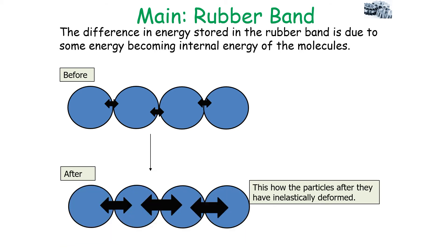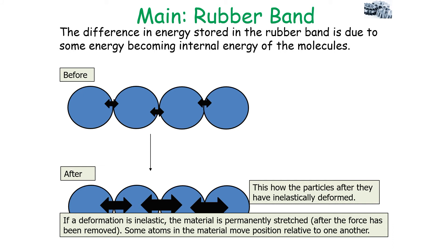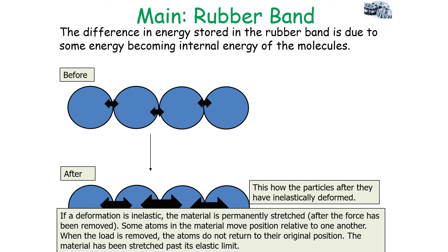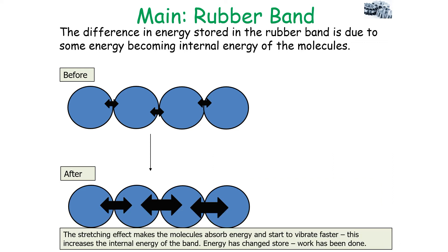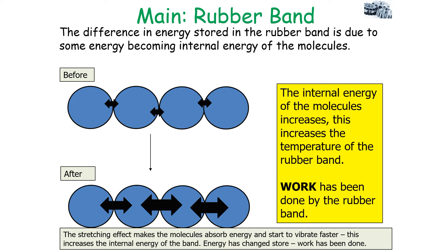However, sometimes particles can act differently after being elastically deformed. If a deformation is inelastic, the material is permanently stretched — after the force is removed, it is still stretched. Some atoms in the material move position relative to each other, and when the load is removed, they do not return to their original position; the material has been stretched past its elastic limit. This stretching effect makes the molecules absorb energy and vibrate faster, which increases the internal energy of the band, increases the temperature of the rubber band, and work is done by the rubber band.